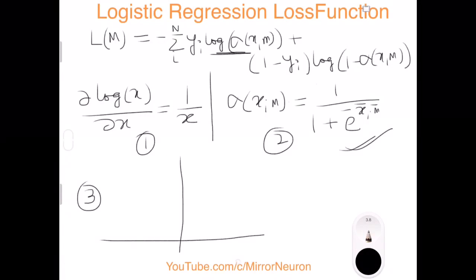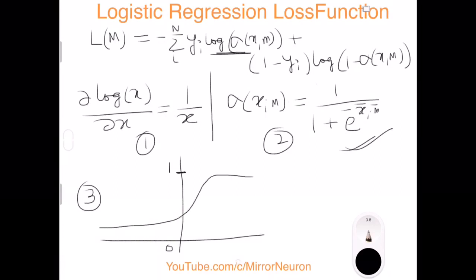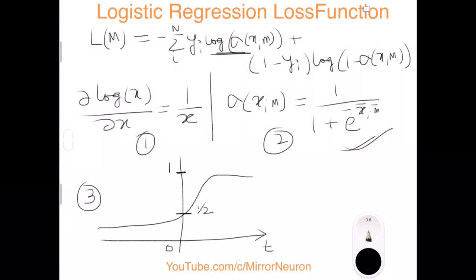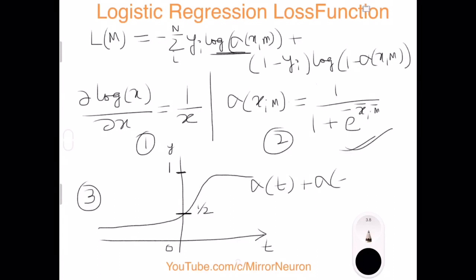The third rule is an interesting property of the sigmoid function. The sigmoid output goes from 0 to 1, and the function is symmetric around the value 0.5. This means sigma(t) + sigma(-t) = 1. Translated to our notation: sigma(x_i · m) + sigma(-x_i · m) = 1. These are the three rules we will use while solving this derivative.